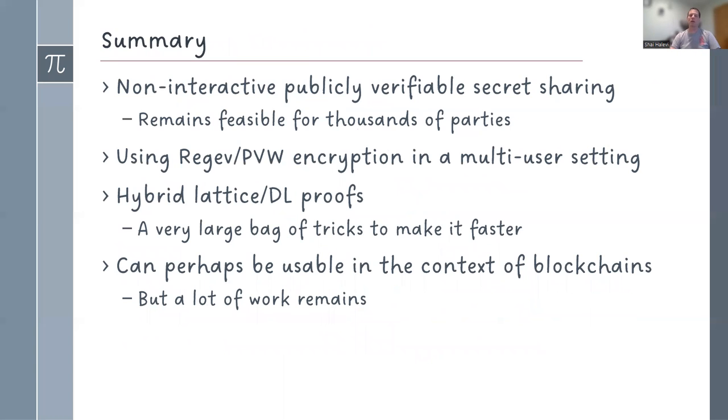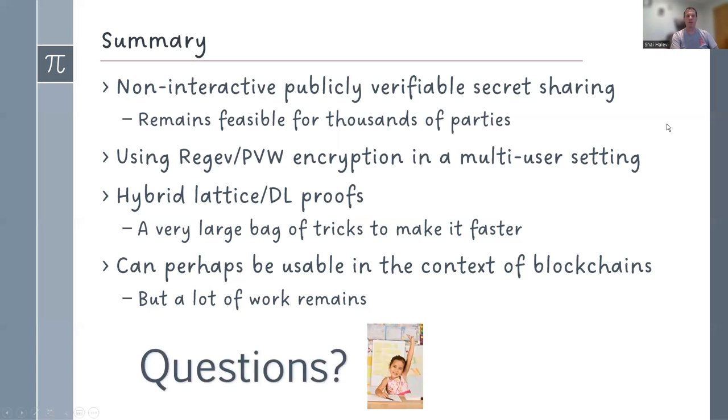And with that, let me summarize. We implemented a non-interactive publicly verifiable secret sharing. It remains feasible even when you have thousands of nodes. I've experimented up to a thousand, but you should be able to do it with a hundred thousand and still come tomorrow and see it finishing. It uses Regev with PVW packing for encryption in the multi-user setting. So there's security analysis that's needed. It uses a hybrid of lattice and discrete log-based proofs and a very large bag of tricks to make them run faster. And maybe we can actually use it to do secure MPC in big crowds, but there's a lot of work that remains. In particular, if you want to use it in blockchains, there are a ton of extra work that still remains to be done. This is really just the core of doing things. And with that, I am done. Thank you very much.